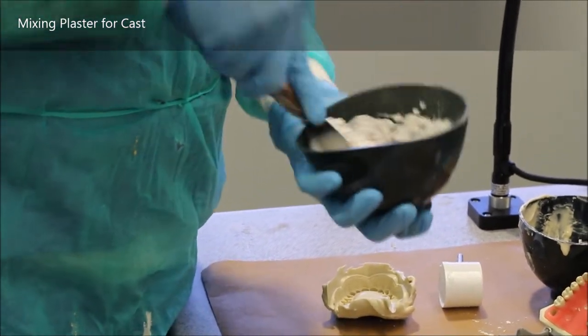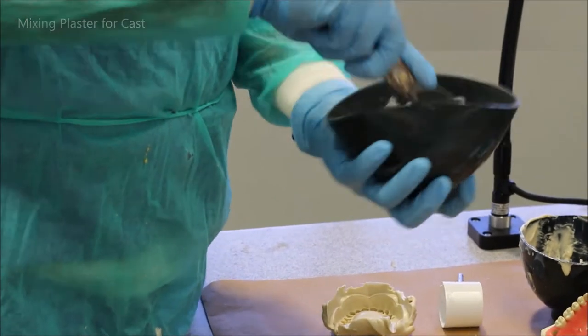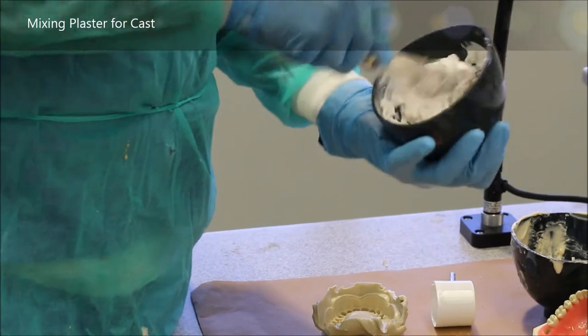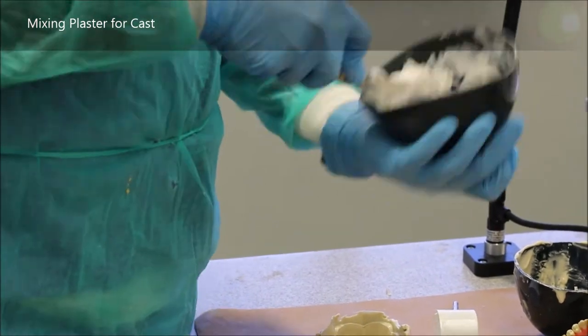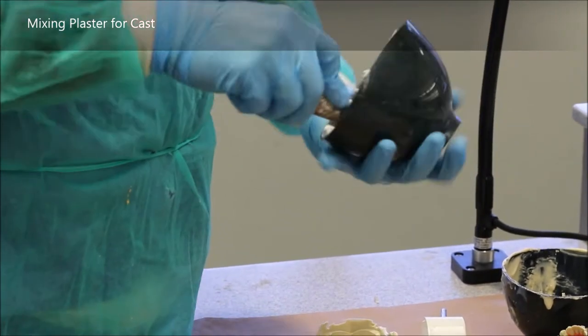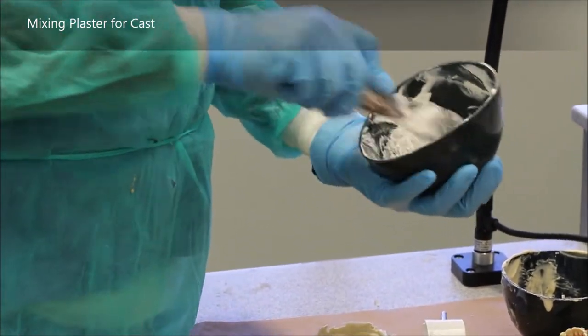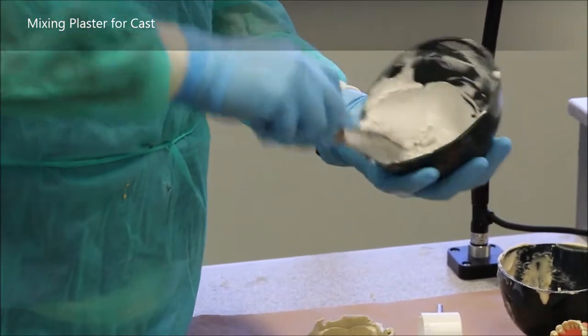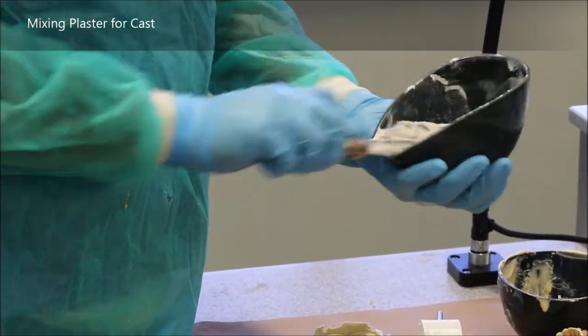In here you can see me mixing the white lab plaster, or fast set lab plaster as it's labeled in the fourth and third floor labs. The ratio of powder to water is two to one, so you take about 150 or 200 grams of powder with 100 grams of water as I did here. You mix it roughly with a spatula in your rubber mixing bowl.